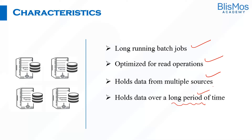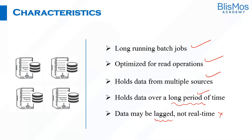It holds data for a long period of time — we may be thinking about the last 10 or 20 years of data. Data may be lagged, not real time. Lag means the data is historical data, which is stored over a period of months or years. In a data warehouse, we are storing historical data, not real-time data as it accumulates moment to moment.